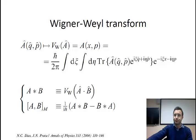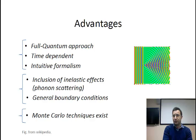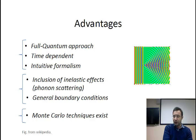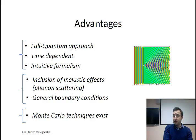This means that even though we are dealing with quantum mechanics formulated in a phase space and very close to experimental language, this is still quantum mechanics — this is not a quantum correction to a classical theory. I would like to mention the advantages of using this formulation. It is a full quantum approach, but it is also a time-dependent approach, so you can see how experiments evolve in time. It is also an intuitive formalism: we don't speak in terms of complex wave functions, but in terms of distribution functions which can be measured.